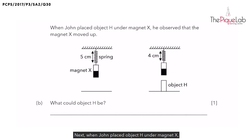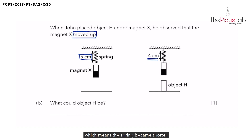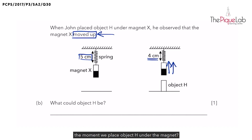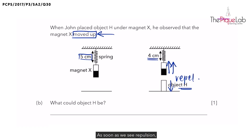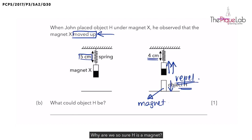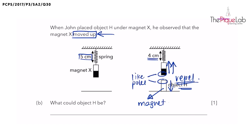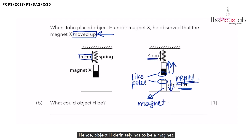Next, when John places Object H under Magnet X, he observed that Magnet X moved up. The spring went from 5 cm to 4 cm, meaning the spring became shorter. Why? The magnet had moved upwards when Object H was placed under it, which means the magnet had repelled Object H. As soon as we see repulsion, we can conclude that the other object is definitely a magnet — because only magnets can repel, specifically with like poles facing each other. So Object H definitely has to be a magnet.